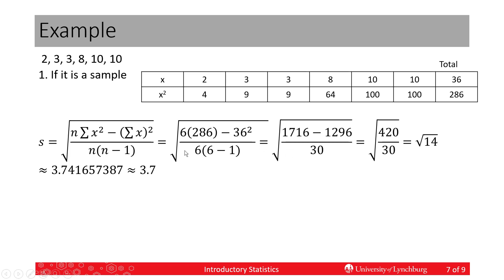6 times 5 is 30, 6 times 286 is 1716, and 36 squared is 1296. I subtract these values. On the top I get 420 divided by 30. You can divide the zeros out, so 42 over 3, which is 14.